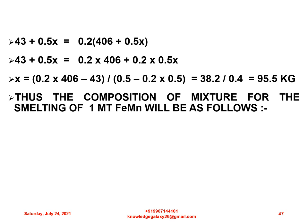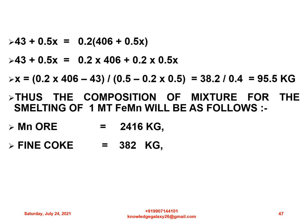Thus, the composition of mixture for the smelting of 1 mt of ferromanganese will be as follows: manganese ore 2,416 kg, fine coke 382 kg, and dolomite 95.5 kg. My dear friends, always keep in mind that this is the quantity of dry ores, coke, and dolomite. Please do not confuse the weight quantities, and always try to account for the moisture content in the calculations.